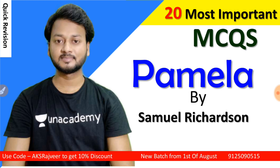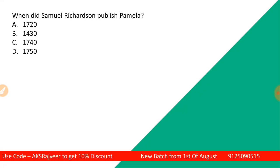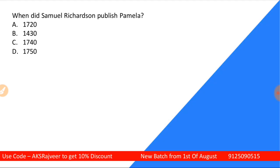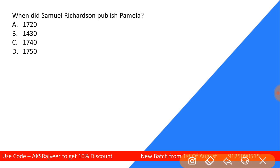Now students, the very first question: When did Samuel Richardson publish Pamela? The options are 1720, 1730, 1740, and 1750. The correct answer is C — 1740. That is the correct answer.